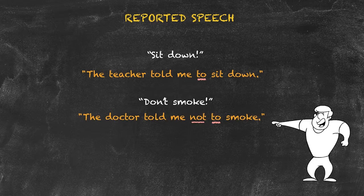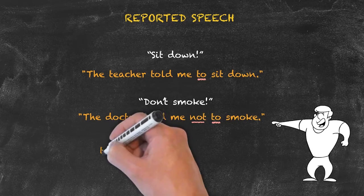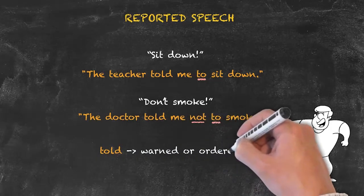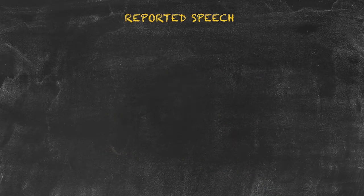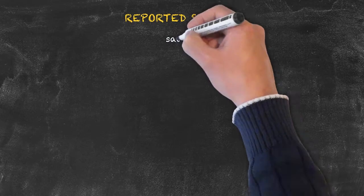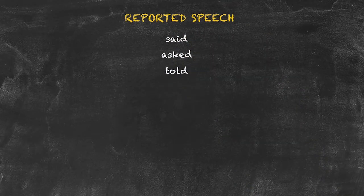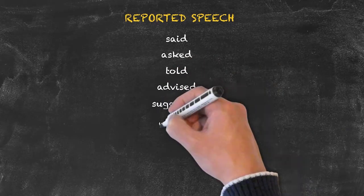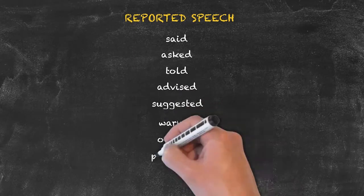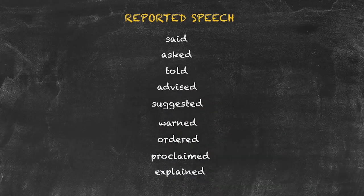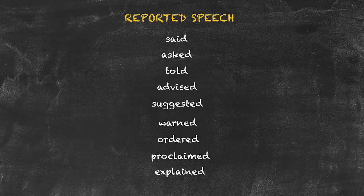In the examples we've just looked at, we use the words 'said,' 'asked,' and 'told' to indicate reported speech. Of course there are more — here are just a few: advised, suggested, warned, ordered, proclaimed, and explained. We can use any word so long as it does indicate that we're reporting somebody's speech.